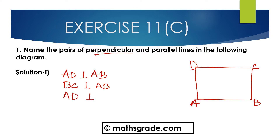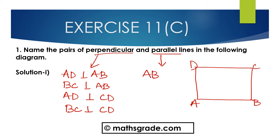AD is perpendicular to CD, and BC is perpendicular to CD. And the parallel lines are AB parallel to CD, and AD parallel to BC.